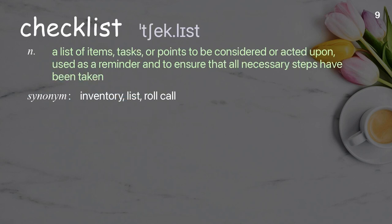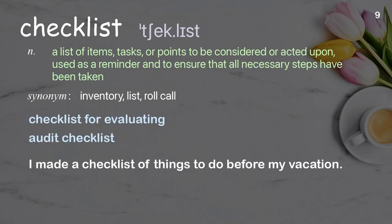Checklist. A list of items, tasks, or points to be considered or acted upon, used as a reminder and to ensure that all necessary steps have been taken. Examples: checklist for evaluating. I made a checklist of things to do before my vacation.